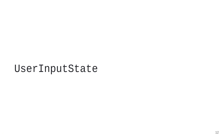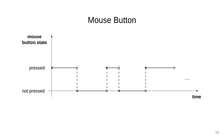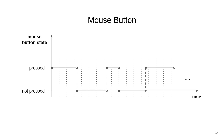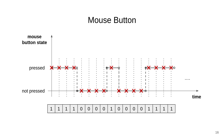Now let's look at the UserInputState type for tracking user input per frame. Consider a simple input device: a mouse button. On the horizontal axis we have time, on the vertical axis the state of the mouse button — pressed or not pressed. As the user presses and releases it we get a signal over time, which we convert from a continuous analog signal into discrete digital values by sampling at regular intervals, obtaining a sequence of bits.